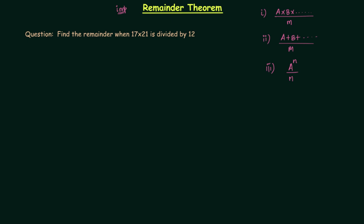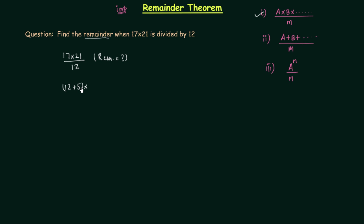I will explain remainder theorem by the help of one question. You can see the question on your screen. We need to find the remainder when 17 multiplied by 21 is divided by 12. This is of the first kind — two numbers multiplied together and then divided by another number. I can write 17 as 12 plus 5 and I can write 21 as 12 plus 9, and they are divided by 12.